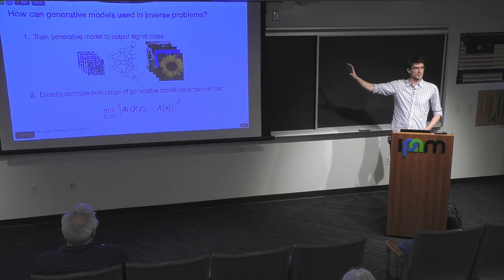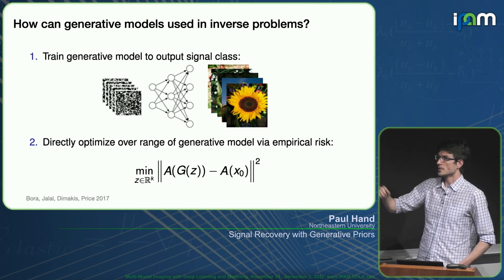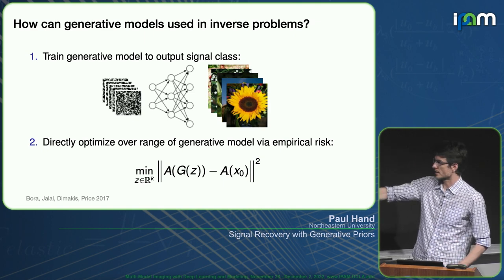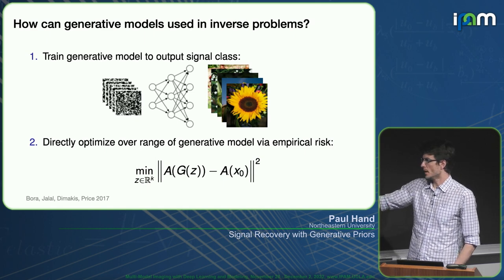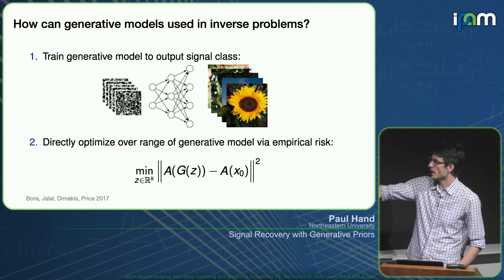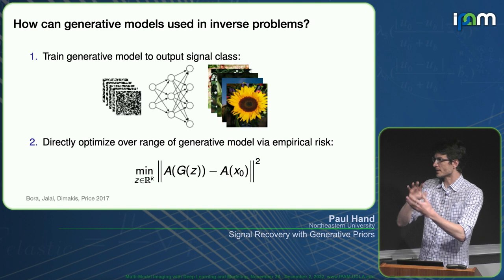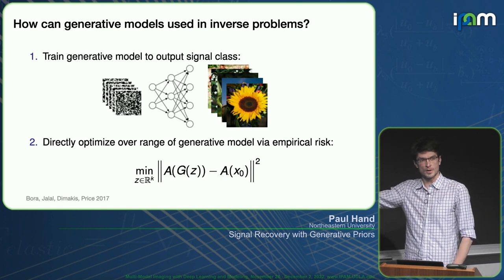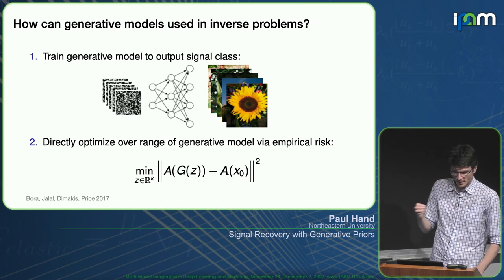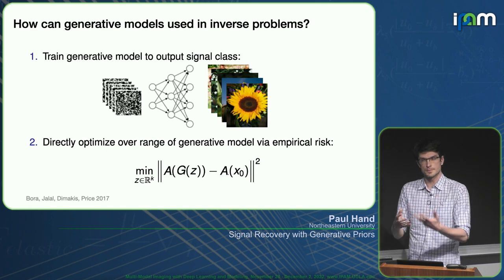Step two: once you have the generative model — trained without knowing what you'll use it for — you have some measurement operator A and some image x₀ that you have measurements of. You can write down a least squares problem to optimize over the input to this generative model G for what is most consistent with your measurements. Concretely: minimize over the latent code z in ℝᵏ, where k is the dimensionality of the manifold expressed by the range of the generative model. This results in a non-convex least squares problem. Formulations like this were popularized by Bora, Jalal, Damakis, and Price for compressed sensing.